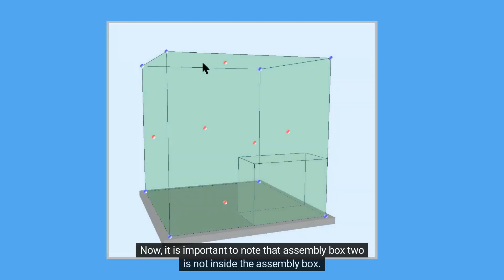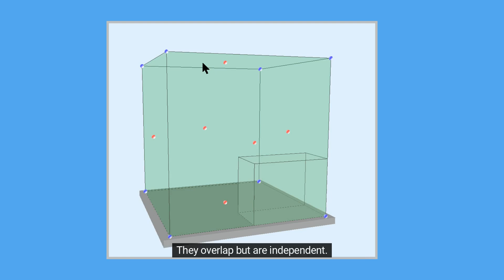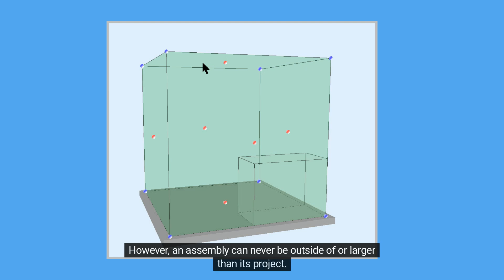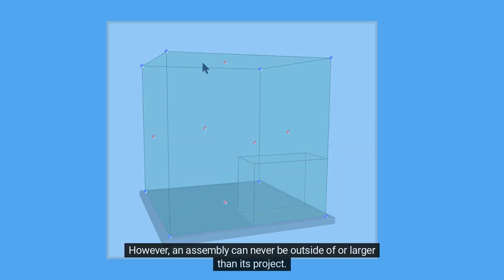It is important to note that Assembly Box 2 is not inside the assembly box — they overlap but are independent. You can change the location or size at any time. However, an assembly can never be outside of or larger than its project.